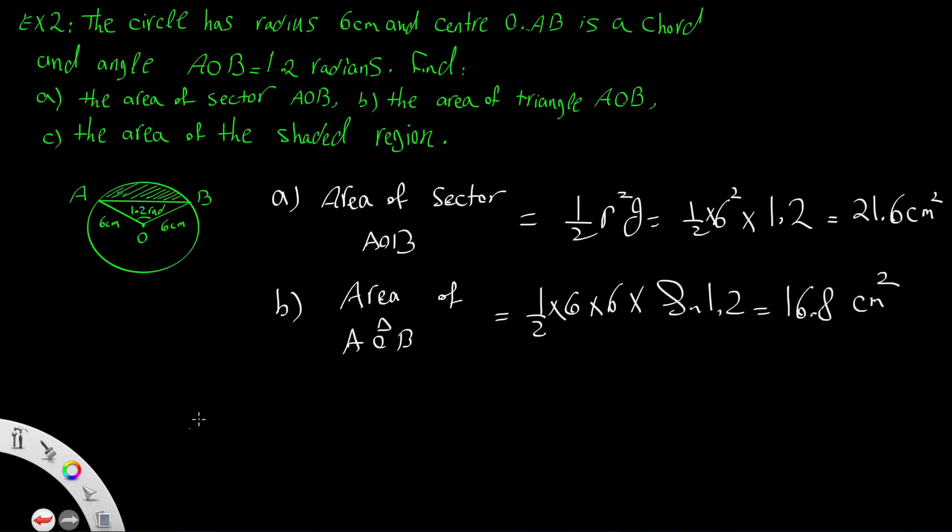Part (c): the area of the shaded region. The area of the shaded region equals the area of sector AOB minus the area of triangle AOB.